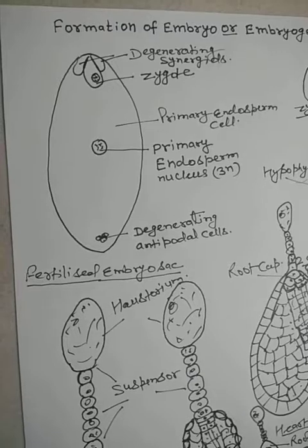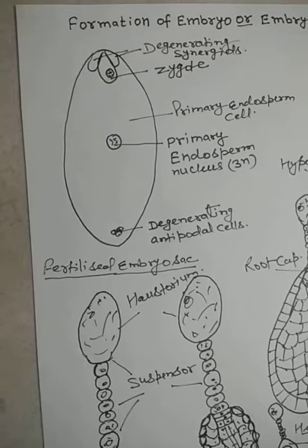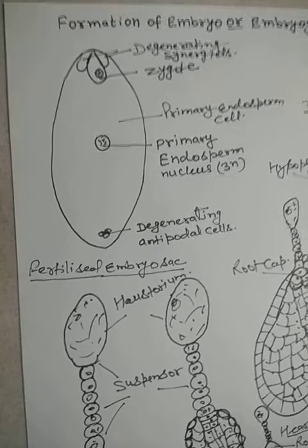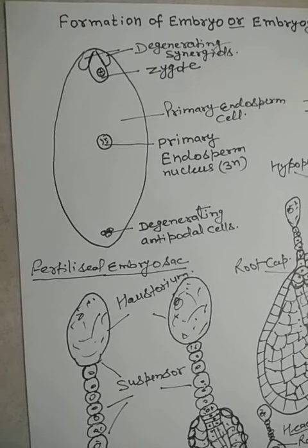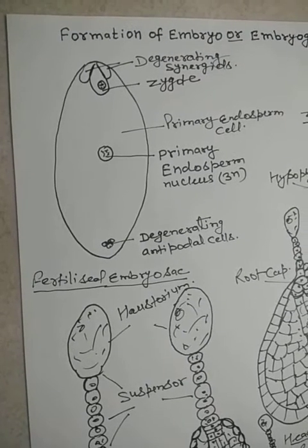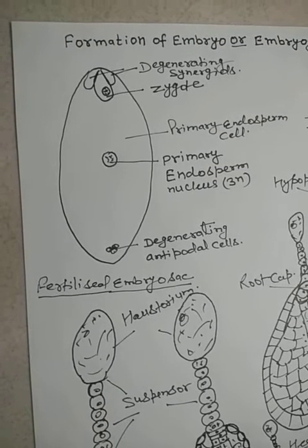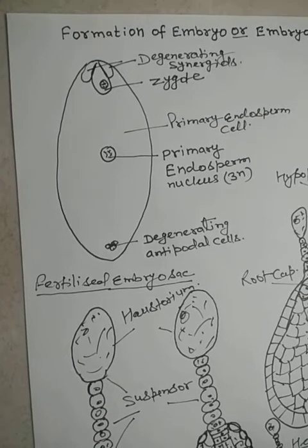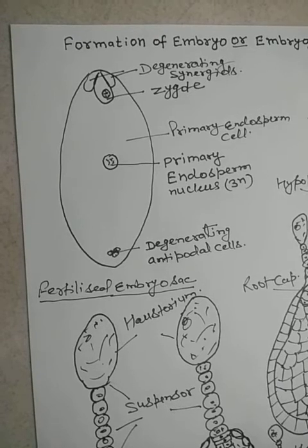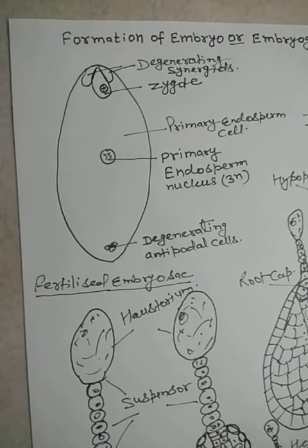After double fertilization, the zygote develops to form the embryo, while the primary endosperm cell develops to form the endosperm. The complete ovule develops into the seed and the ovary changes into the fruit. Other parts like sepals, petals, and stigma fall off.